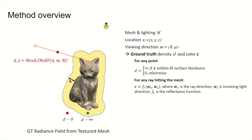For a ray intersecting the mesh surface, the color of the ray corresponds to the color of the intersection point on the mesh. This color can be determined based on a reflection function that takes into account the ray direction, the incoming light direction, and the properties of the mesh.